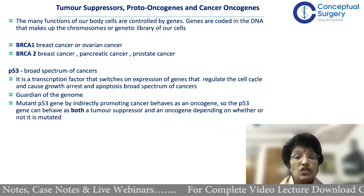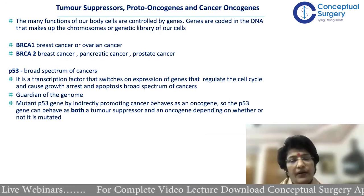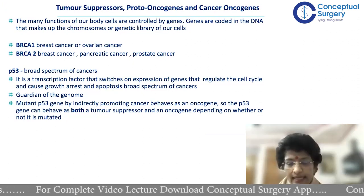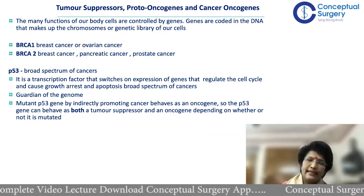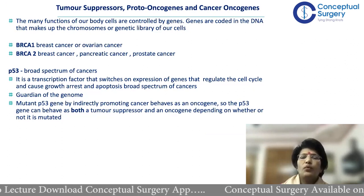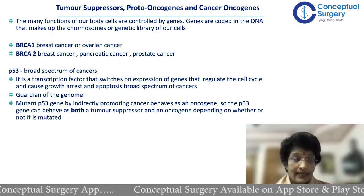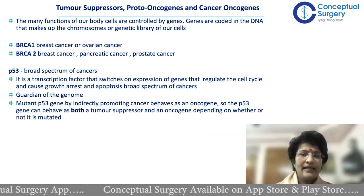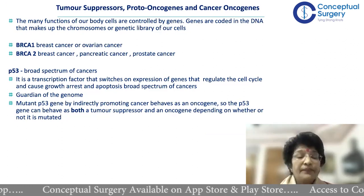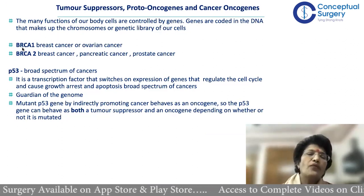Proto-oncogenes, tumor suppressor genes, and cell cycle regulatory genes are the three things that keep cell division in check. All functions in the body are controlled by genes, which are encoded in the DNA. DNA makes up the chromosome, which is the genetic library of our cells — and that is where the genes are housed.